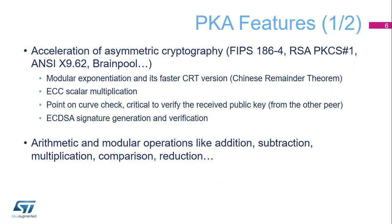Here is a list of operations the PKA can perform. Acceleration of asymmetric cryptography: modular exponentiation, RSA Chinese Remainder Theorem (CRT) exponentiation, ECC scalar multiplication and point-on-curve check, and ECDSA signature generation and verification. Arithmetic and modular operations include arithmetic addition, subtraction, multiplication, and comparison; modular addition, subtraction, reduction, and inversion; and Montgomery multiplication. Thanks to these operations, the PKA supports many standard public key algorithms.